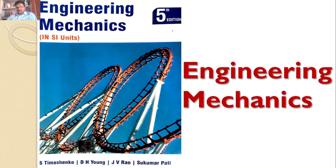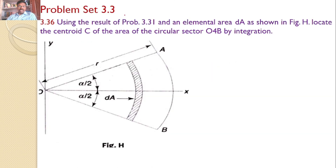Welcome to RK Tutorials — Solutions to Engineering Mechanics by S. Timoshenko, 5th edition. In this tutorial, we will discuss problem set 3.3, problem number 3.36: using the result of problem 3.31 and an elemental area DA as shown in the figure, locate the centroid C of the area of the circular sector OAB by integration.